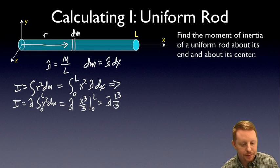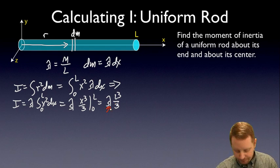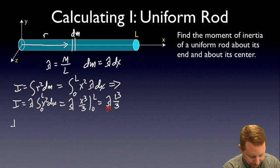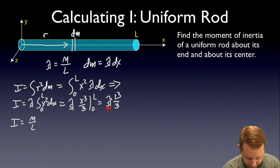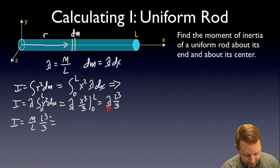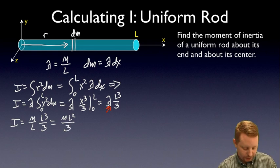Substituting lambda equals M over L back in: I equals M over L times L cubed over 3. One of the L's cancels, giving M L squared over 3, or one-third M L squared — exactly what we saw on the earlier chart for the moment of inertia of a uniform rod about its end.